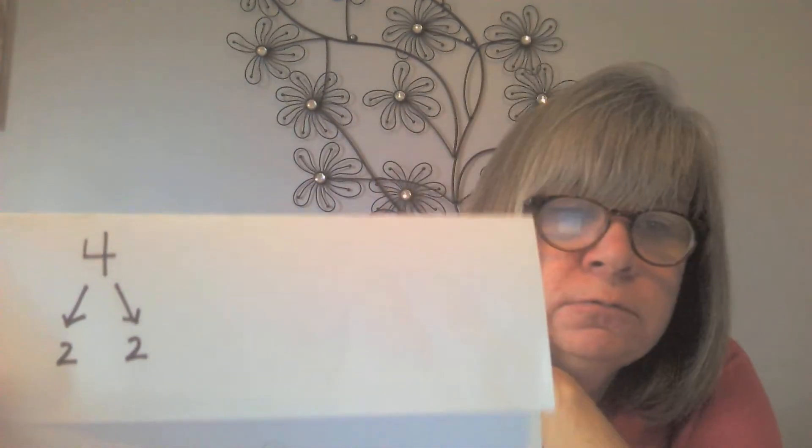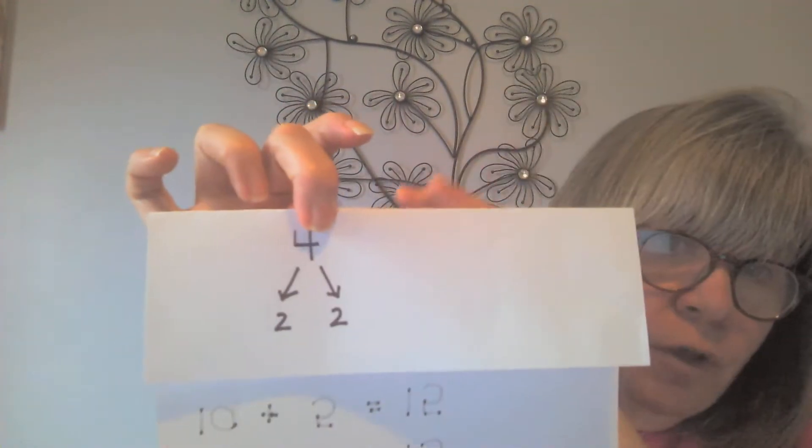Let me show you a really simple adding question so you understand what this means by whole-part-part. I put 4 at the top, which is the whole and the sum. When you add 2 and 2, those are the parts and they go together to make the whole, 4. Today on this paper they give you the whole and one of the parts, so you have to figure out the missing part.